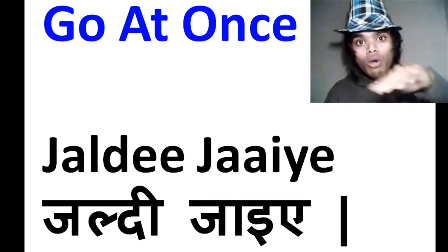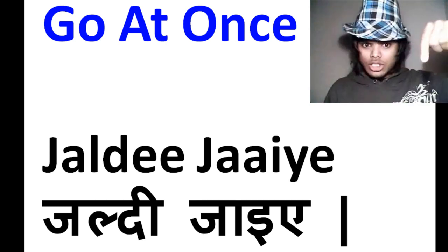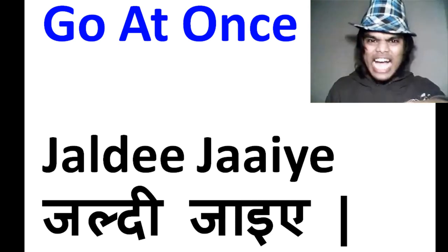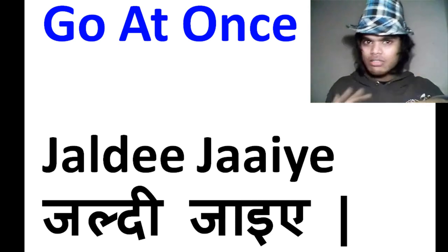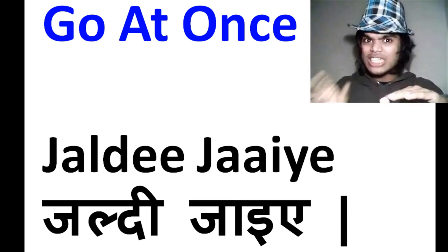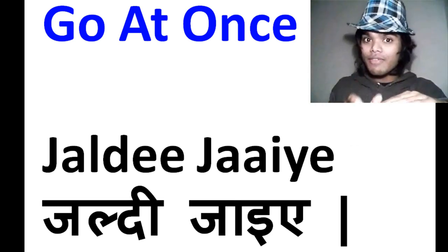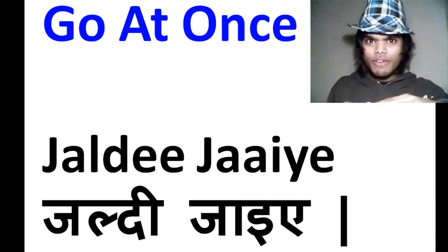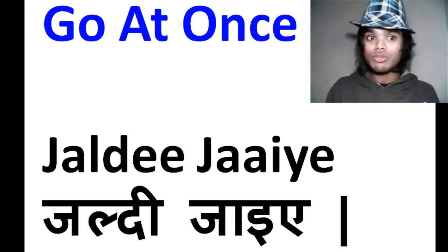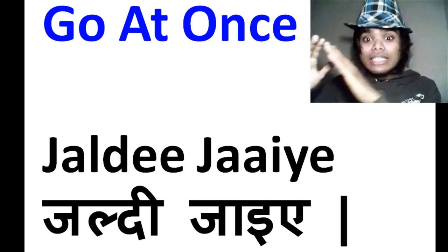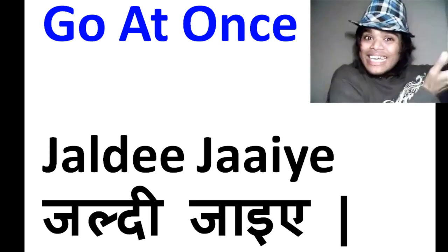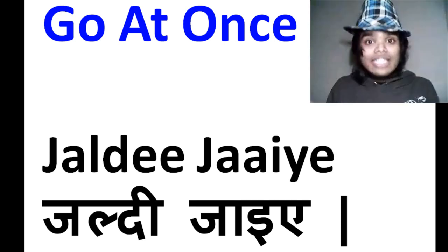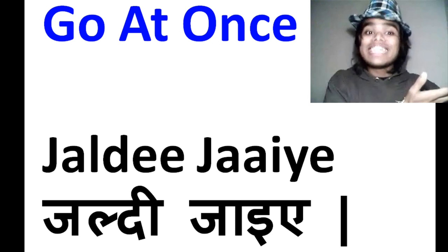'Jayye' is the respectful form of 'go.' For a friendly level, we say 'jao.' And the root form is 'ja' — just 'ja' with no suffix after it. 'Ja' is the root form of the verb 'go,' and using it with no suffix means no respect. So with respect, we say 'jaldi jayye' — for example, to my dad: 'jaldi office jayye.'